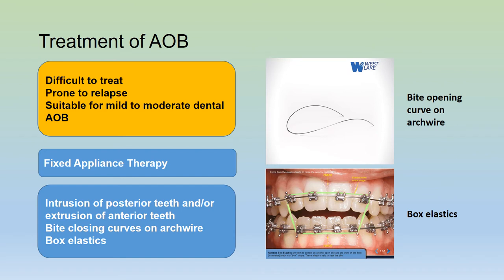Anterior open bite, especially due to skeletal factors, is difficult to treat and is prone to relapse. It is more successful for mild to moderate anterior open bite. Treatment involves use of fixed orthodontic appliances to achieve intrusion of the posterior teeth and/or extrusion of the anterior teeth. This can be achieved by the use of bite-closing curves on the arch wire and/or use of box elastics in the anterior part of the dentition.